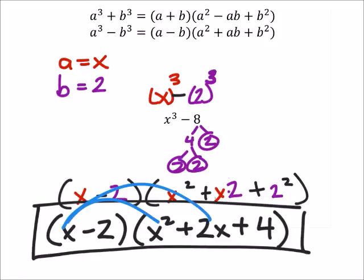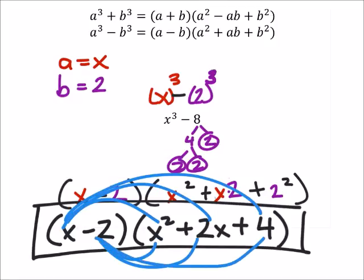You could distribute the x into this parentheses, and then you could distribute that as a negative 2 into the parentheses. It's FOIL but with three terms, and then when you do that you should end up with